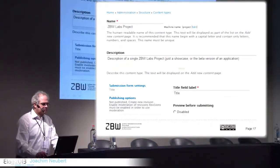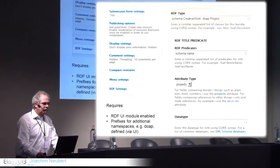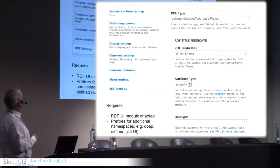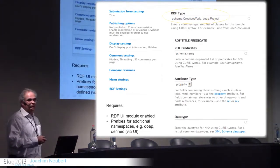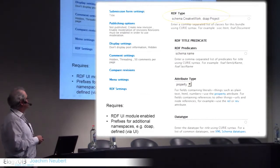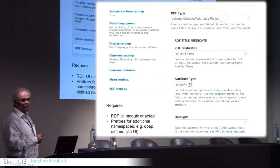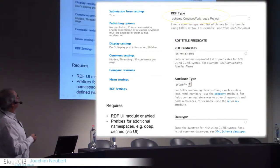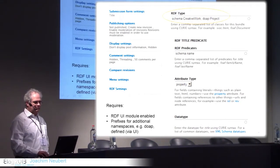You can add a type and description and a lot of publishing options and settings for display, comments, and so on. And you can define RDF types for such a new content type. In this case, we said this is a project according to the DOAP ontology — DOAP is a Description of a Project on the web — and it's also a creative work according to the schema.org ontology, which is used by the major search engines.